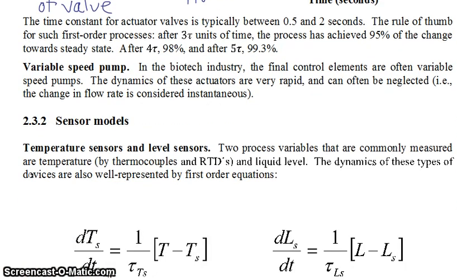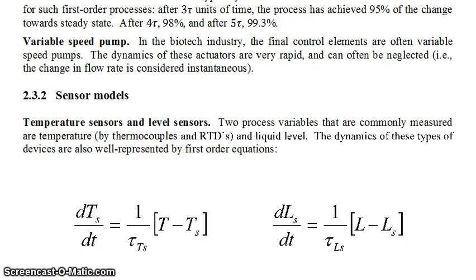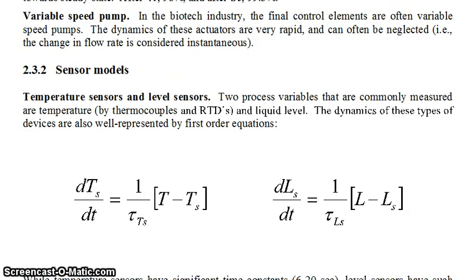As for sensor models, there are a few common process variables to consider. Two of them are temperature — measured by thermocouples and RTDs — and liquid level. The dynamics of these kinds of devices are usually well represented by first-order equations, in almost the exact same format.